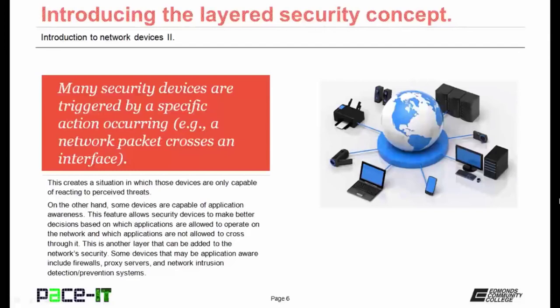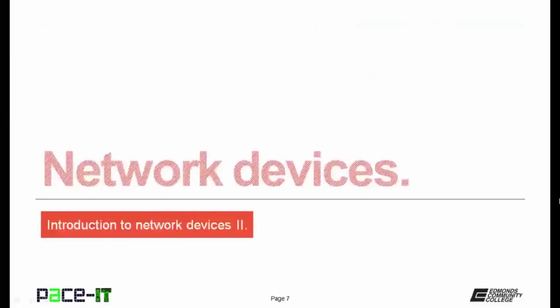Many security devices are triggered by a specific action occurring, such as a network packet crossing an interface on a router, creating a situation where those devices are only capable of reacting to perceived threats. Some devices are capable of application awareness, which allows security devices to make better decisions based on which applications are allowed to operate on the network. Devices that may be application-aware include firewalls, proxy servers, and network intrusion detection or prevention systems.